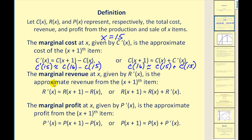This is also true for marginal revenue and marginal profit. If we evaluate the derivative of the revenue function at x, that value will give us the approximate revenue from the x plus 1th item. If we evaluate the derivative of the profit function at x, then we find the approximate change in profit from the x plus 1th item.